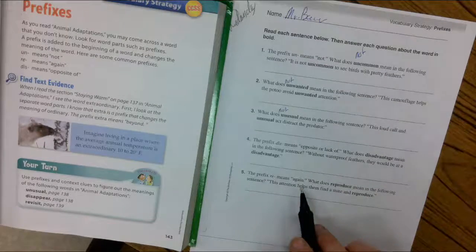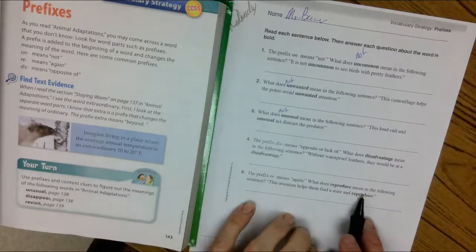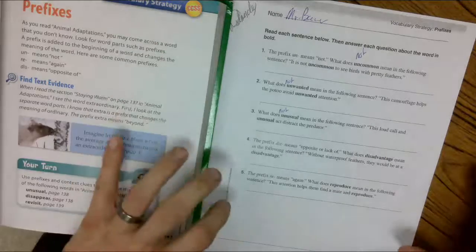And the pre here—re means to do it again. What does reproduce mean? To do it again. Alright, so let's just try a couple.